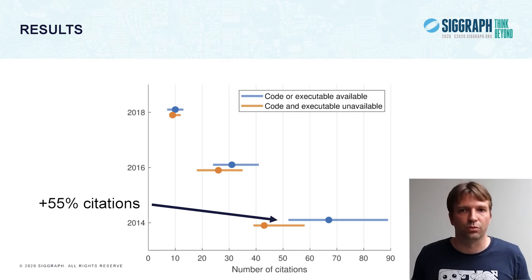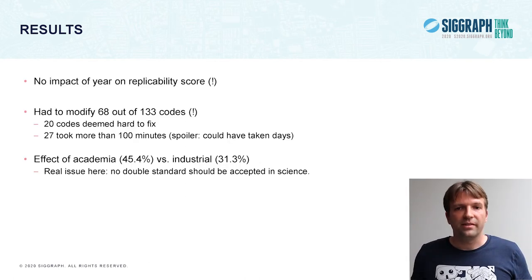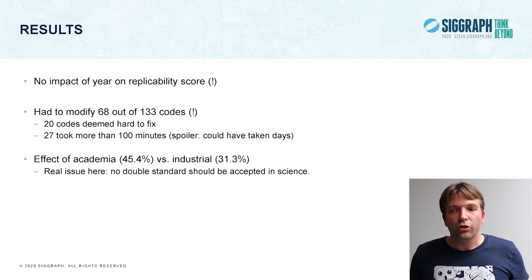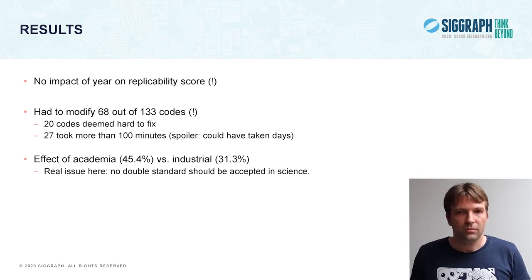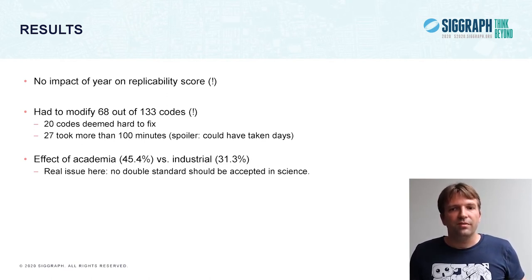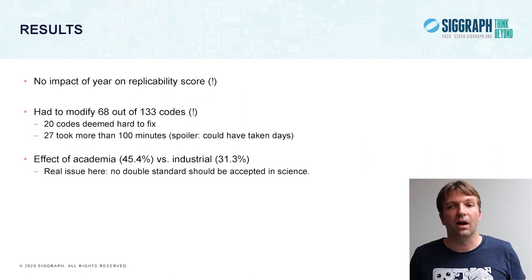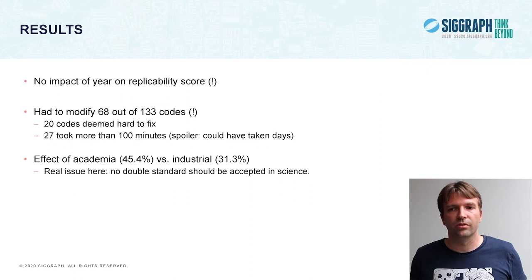It provides an incentive as well. Surprisingly, we did not find an impact of the year on the replicability score. It just means that for older papers, it took more time and effort to run the code, but they were as replicable as recent papers. Also, we had to modify more than half of the code to make them work. And 20 of these codes were deemed hard to fix, and for 27 of them it took more than 100 minutes — it could even have taken days to fix them.